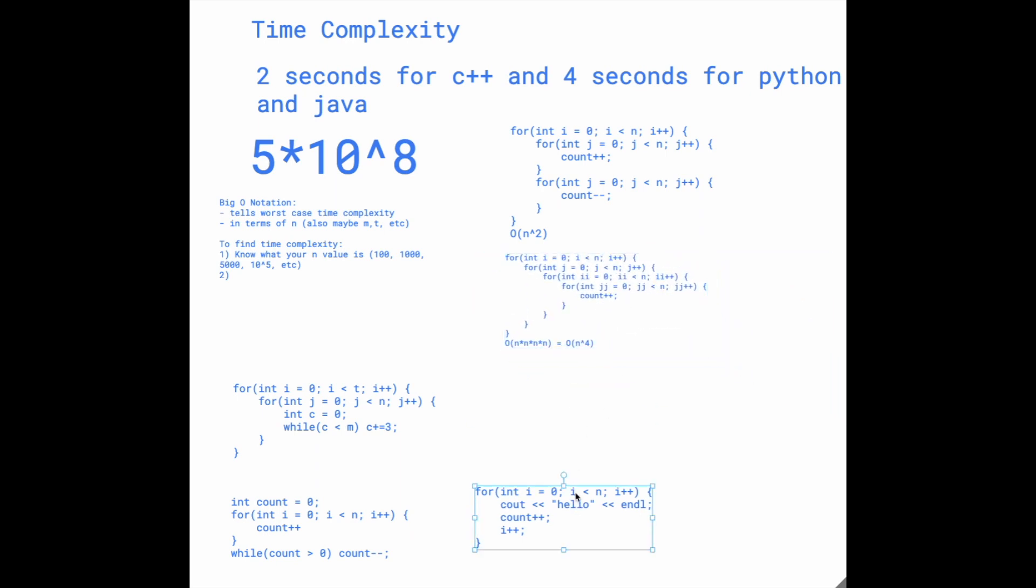Take a look at this one. I think we went through a similar example before. This one is just a for loop n times, and then we have multiple operations inside the for loop.